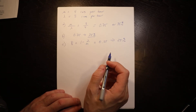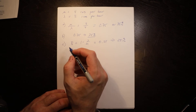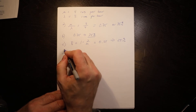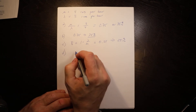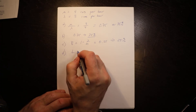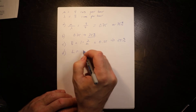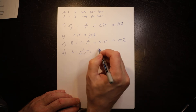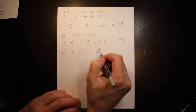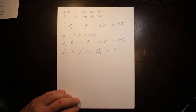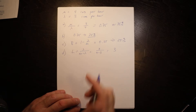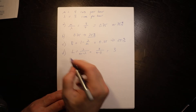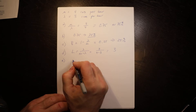Part (d): find the average number of cars receiving and waiting to receive service — the number in the system. L equals lambda over (mu minus lambda), which is three over (four minus three), equals three. So at any given time the expected number of cars in the system is three.